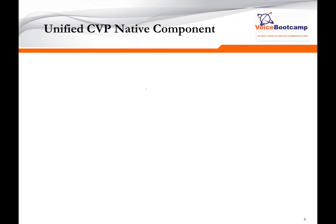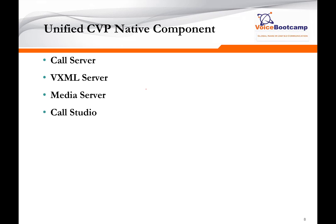CVP has two types of components: native components, which are built into the CVP server, and non-native components that work around the CVP server to complete a call. The native components are: call server, VXML server, media server, call studio, reporting server, and operation console — these are the six native components of CVP.